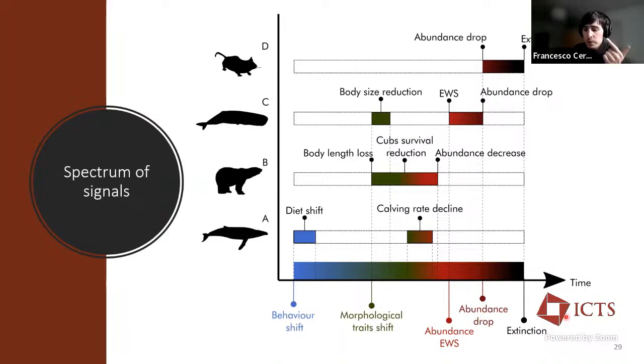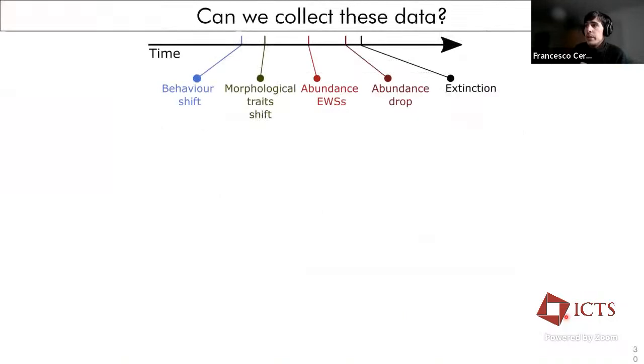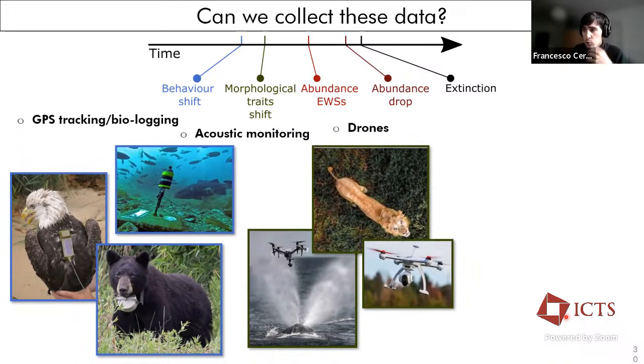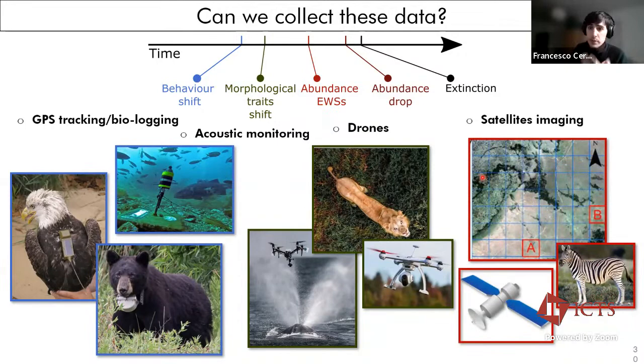Indeed, we can now collect this different type of data thanks to the cutting edge methodological tools like GPS tracking or biologging and acoustic monitoring, or drones that can help us measuring, obtaining photographic measurements, so body traits information on animals that are really hard to sample otherwise in nature. And even satellite imaging with big animals can help us now in counting populations.